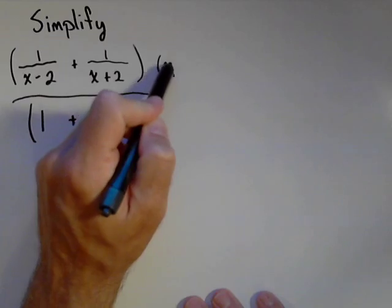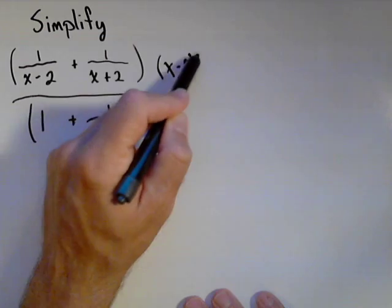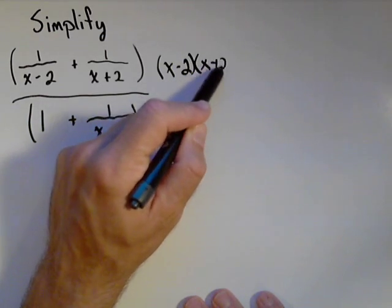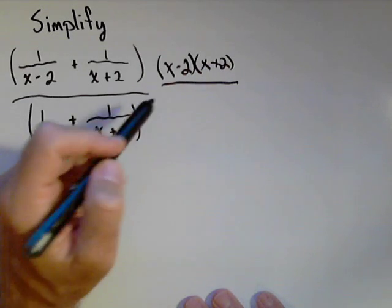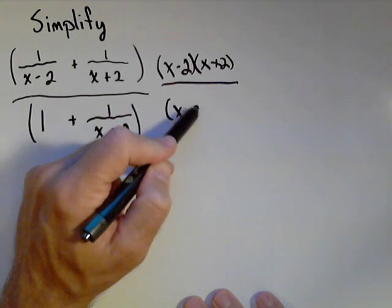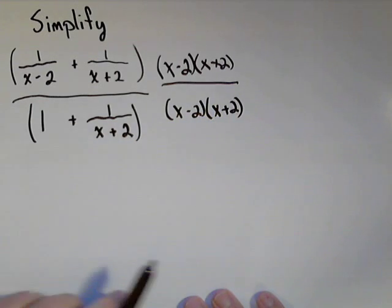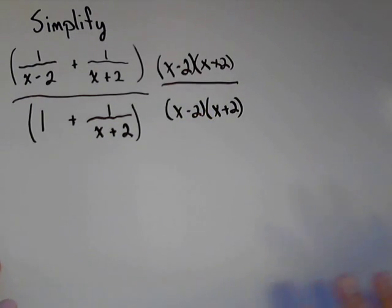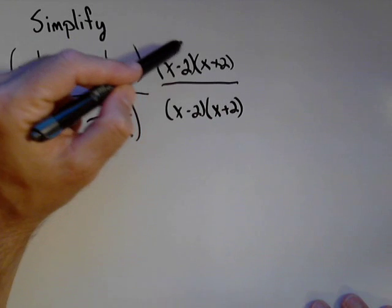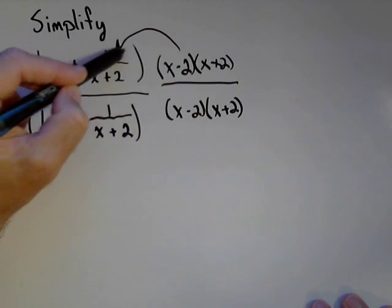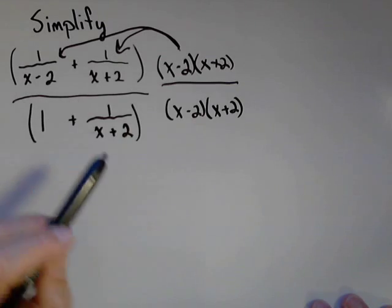So I'm gonna multiply by x minus 2, x plus 2 on both top and bottom. x minus 2, x plus 2. Alright, now, one thing you have to be careful of is this multiplication distributes. It's gonna go to this piece and also to this piece.